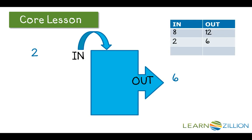2 goes in and 6 comes out. 8 goes in and 12 comes out. Let's get another number. 5 goes in and 9 goes out. And here's our chart.